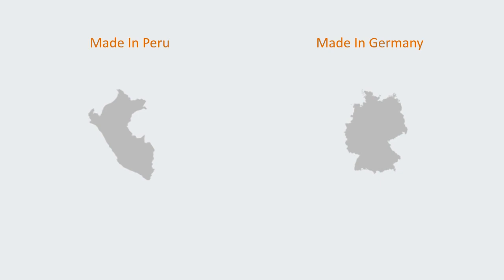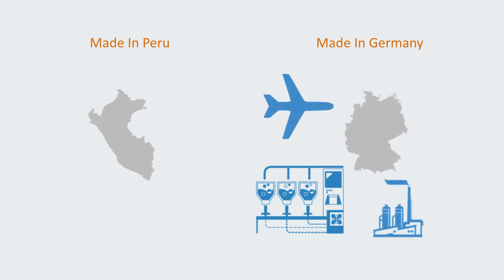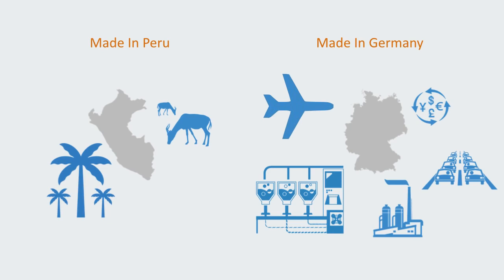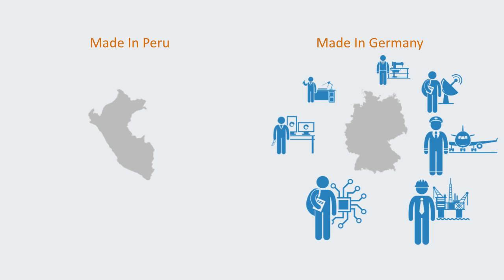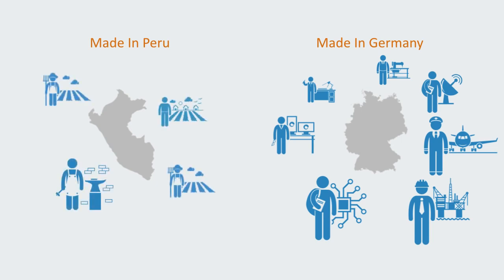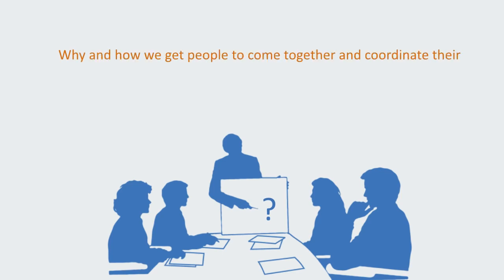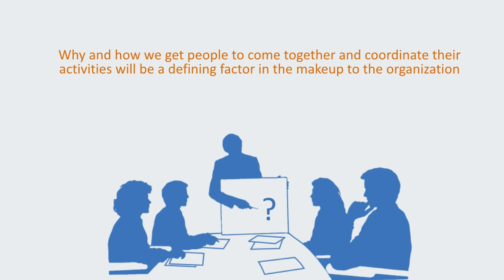For example, if we take two economies like that of Germany and Peru, we might ask how Germany is capable of producing all sorts of complex products and services — sophisticated chemicals, airplanes, advanced financial services — while the Peruvian economy is not capable of producing many of these things. If we look closely, we will see that within the German economy there are very many people who know how to do very many different specialized functions, and they have very many large public and private organizations capable of coordinating all these diverse activities towards producing these complex products. While the Peruvian economy lacks both this wide variety and abundance of different occupations, and many of the institutions required to successfully coordinate them. Why and how we get people to come together and coordinate their activities will be a defining factor in the makeup of the organization, and we will be discussing different managerial approaches to achieving this in coming modules.